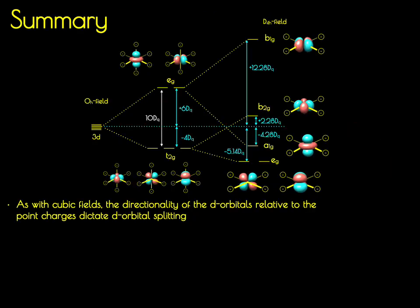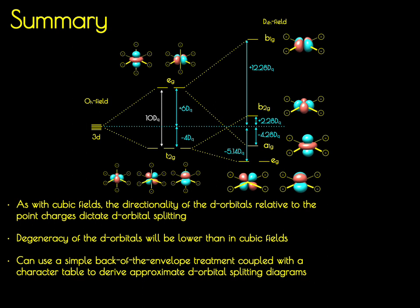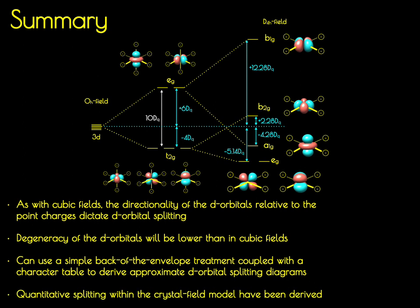To summarize: as with the high-symmetry cubic fields, the directionality of the d-orbitals relative to the point charges will dictate the d-orbital destabilizations and hence the splittings. The degeneracy of the d-orbitals will be lower than in cubic fields, following the relevant point group. You can use a simple back-of-the-envelope treatment to derive d-orbital splittings and relative energies. If you need a more quantitative description in terms of absolute Dq values, these have been tabulated. In the next set of videos, we'll apply this by exploring the spectrochemical series and the concept of pairing energy.